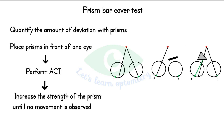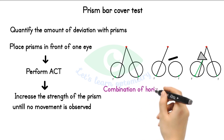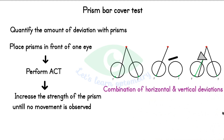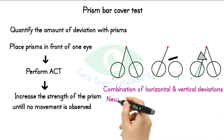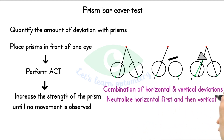As the light rays fall on the fovea there is no longer an incentive to move the eyes, and the movement stops. In some cases there occurs a combination of deviations — in that case we neutralize the horizontal deviation first, followed by the vertical deviation.